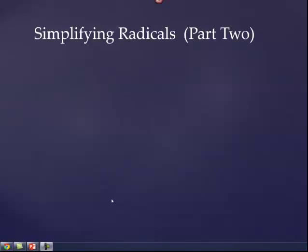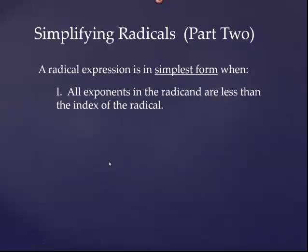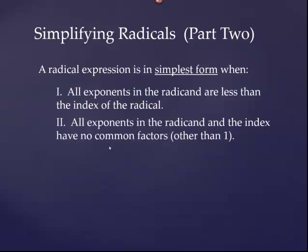This is the second part of my video on simplifying radicals. Just a quick review. Our goal here is to be able to rewrite any radical expression in simplest form. A radical expression is in simplest form when, number one, all exponents in the radicand are less than the index — that's what we looked at in part one. Number two, all exponents in the radicand along with the index should have no common factors other than one. We also took a look at that in part one.